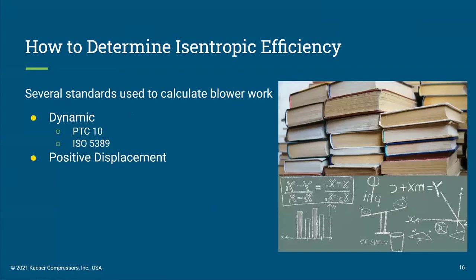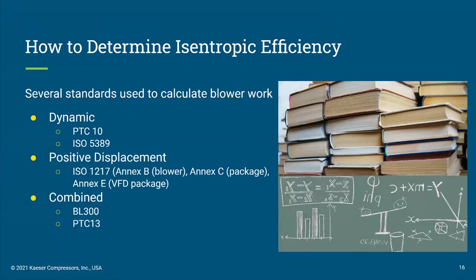To determine isentropic efficiency, we need two numbers: the isentropic power from the previous formula and the actual power. For the isentropic power, you can find this formula in most thermodynamic textbooks or on the internet, or as it specifically relates to a low-pressure compressor or blower, the standards mentioned here will lead you through the calculation. Each of them demonstrates how to calculate your isentropic power. Again, this is the ideal process and is not what you should expect from the actual machine, as the actual machine has other components required to run the unit, therefore increasing its actual power consumption.